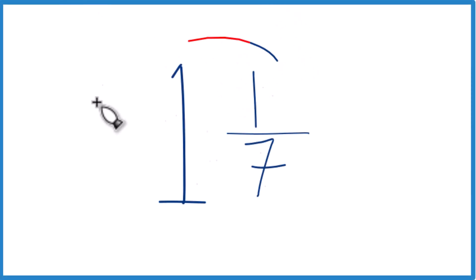If you need to write the mixed number 1 and 1 7th as an improper fraction, here's how you can do it.